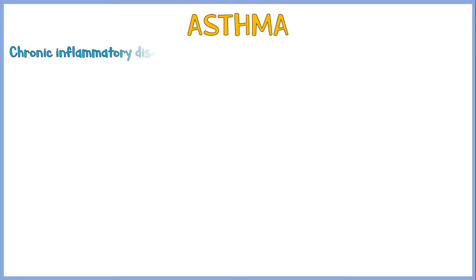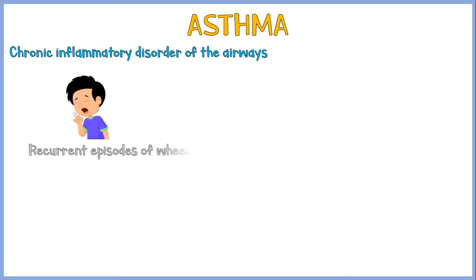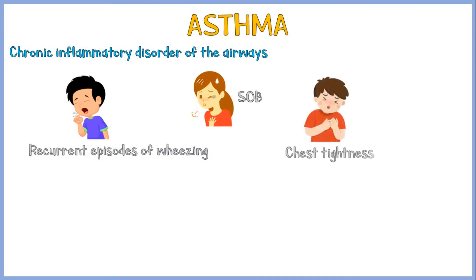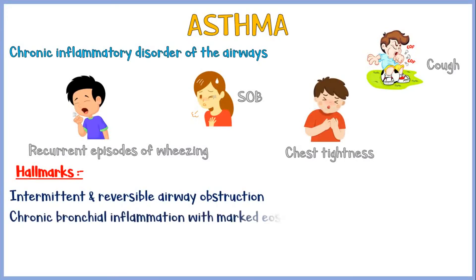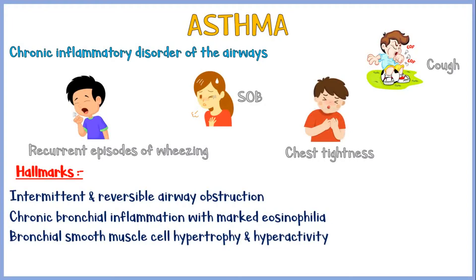Asthma is a chronic inflammatory disorder of the airways that causes recurrent episodes of wheezing, shortness of breath, chest tightness, and cough. Hallmarks of the disease are intermittent and reversible airway obstruction, chronic bronchial inflammation with marked eosinophilia, bronchial smooth muscle cell hypertrophy and hyper-reactivity, and increased mucous accretion.